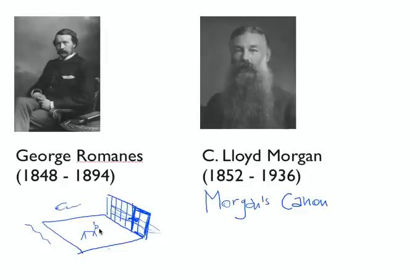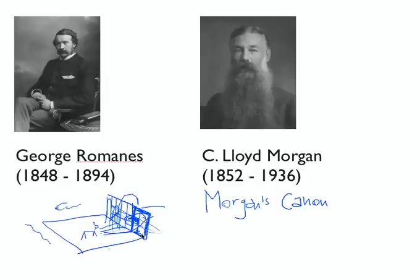The dog tried all sorts of different things: it would approach the fence, try to get through the bars, jump up and down, try to get over it — not successfully. It would approach the door, shake the door, then approach the latch, and then almost accidentally — probably just accidentally — the latch was opened by something the dog did, and that opened the door, and the dog was able to get out.